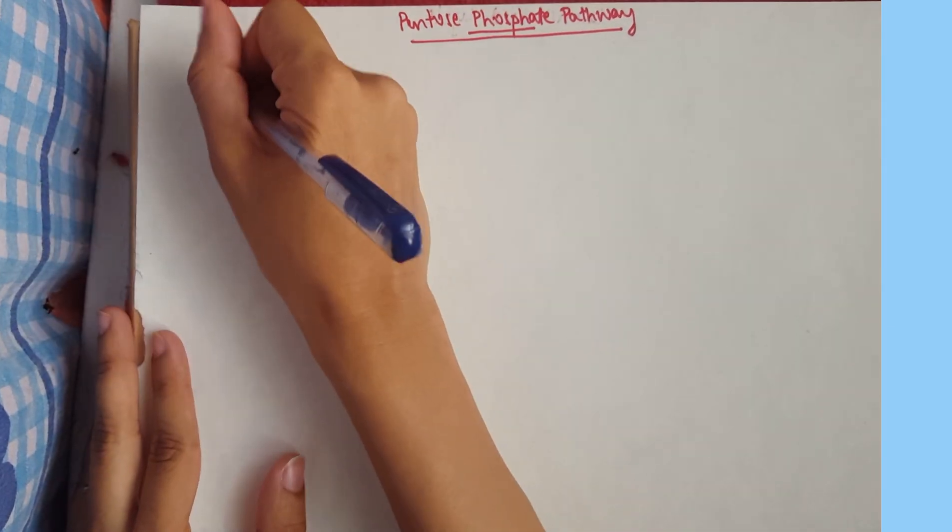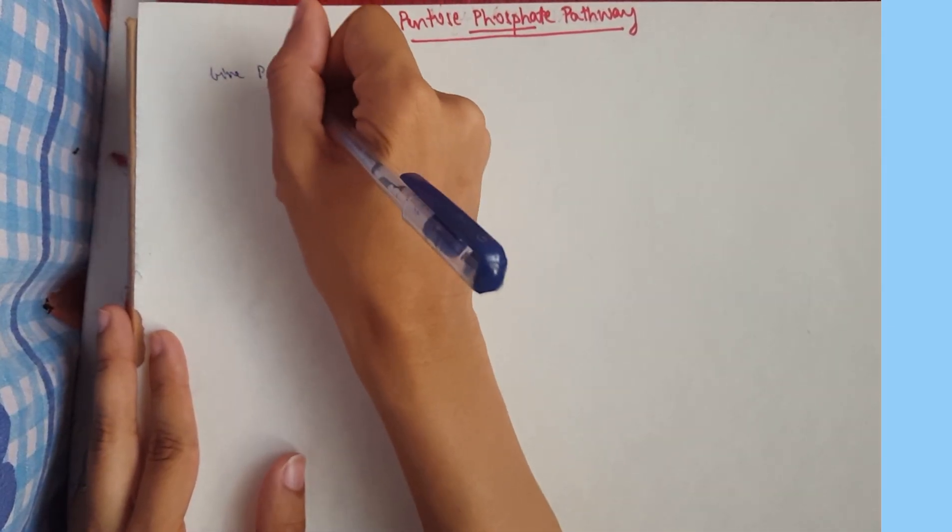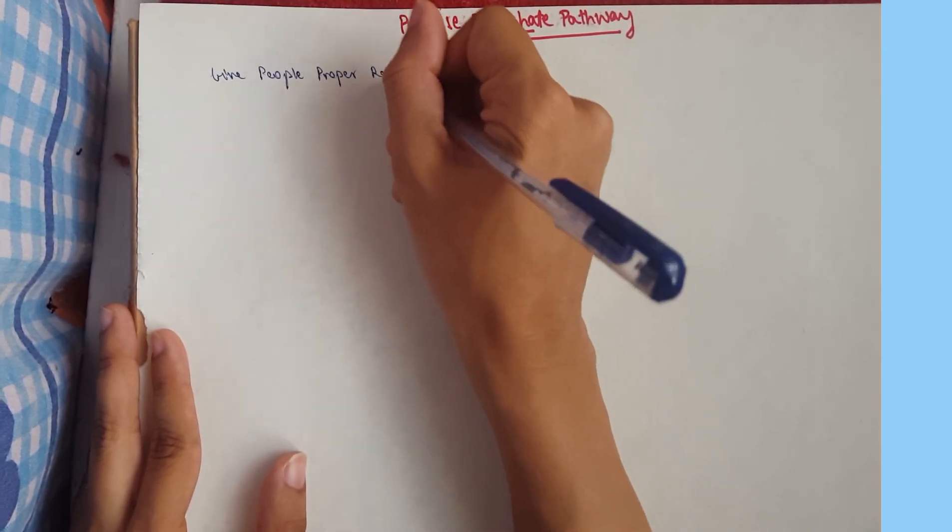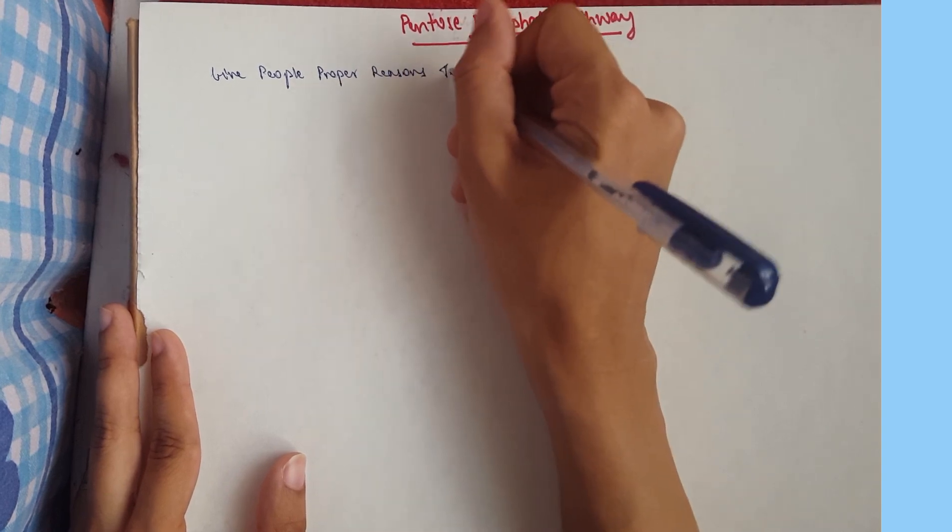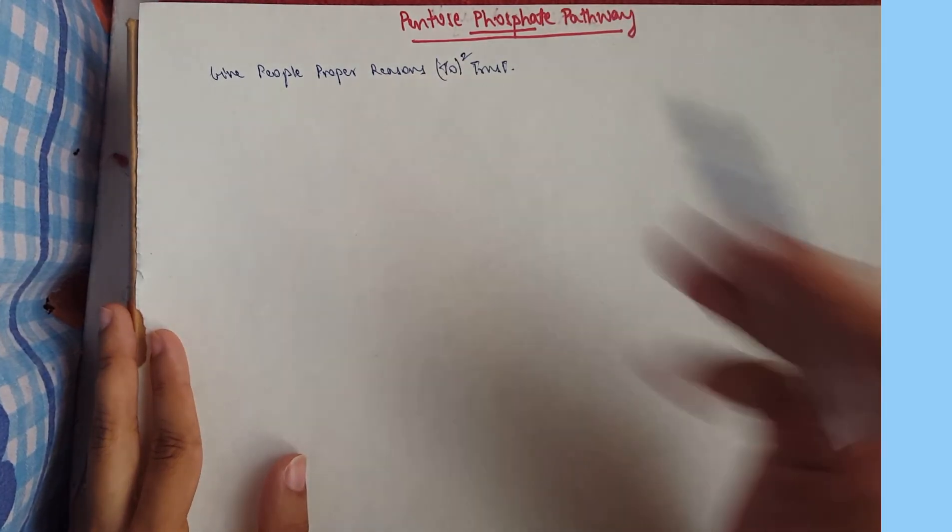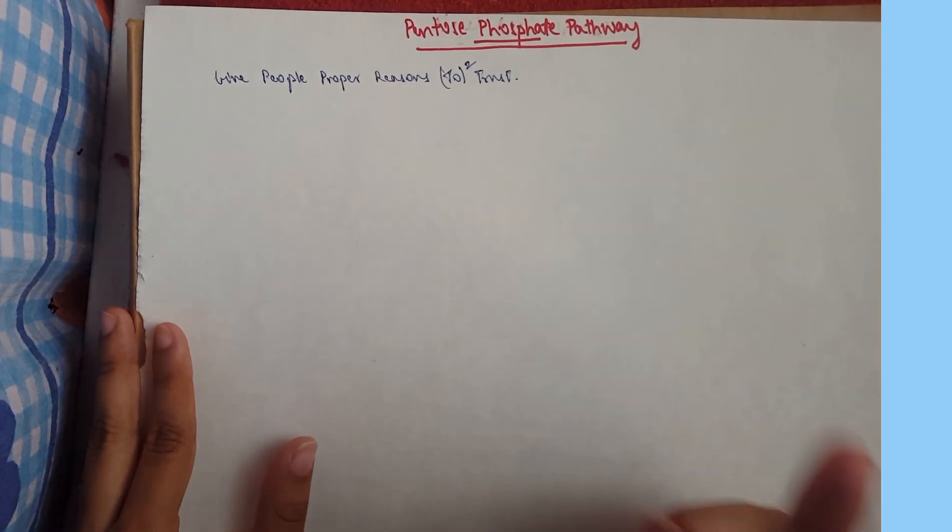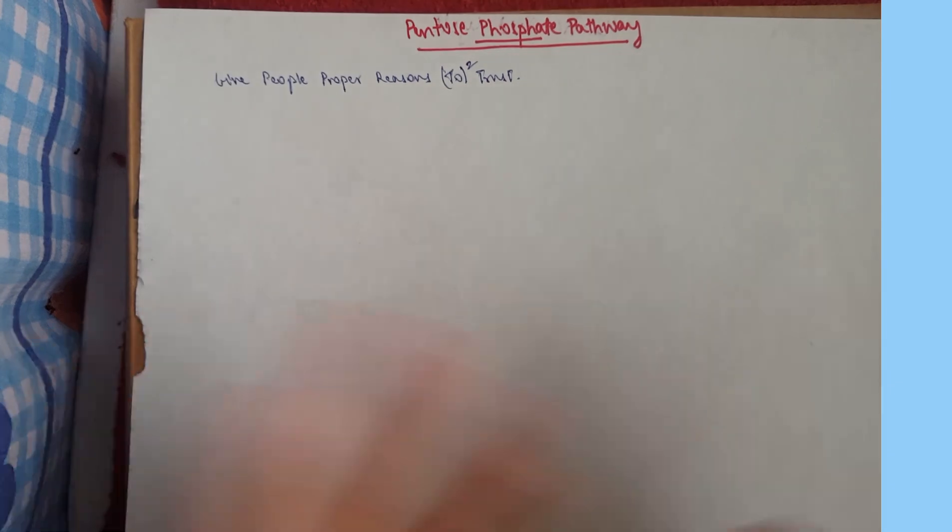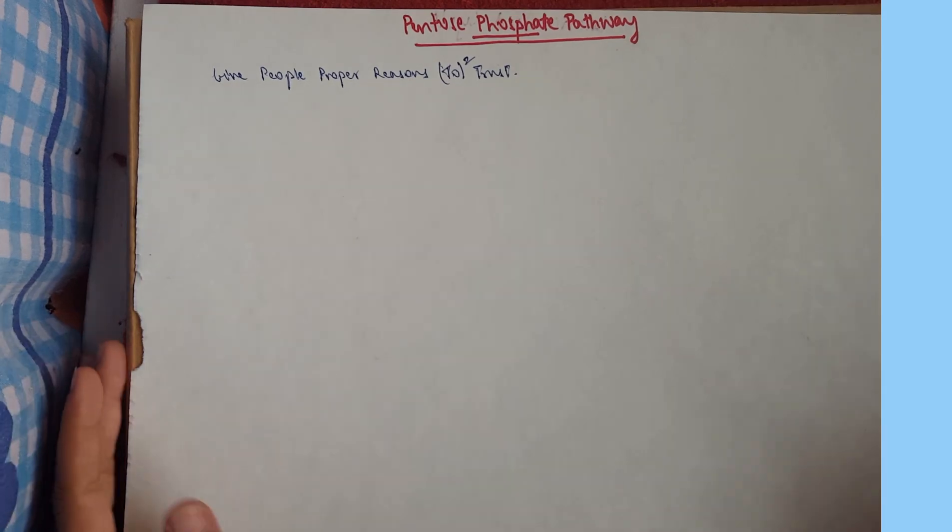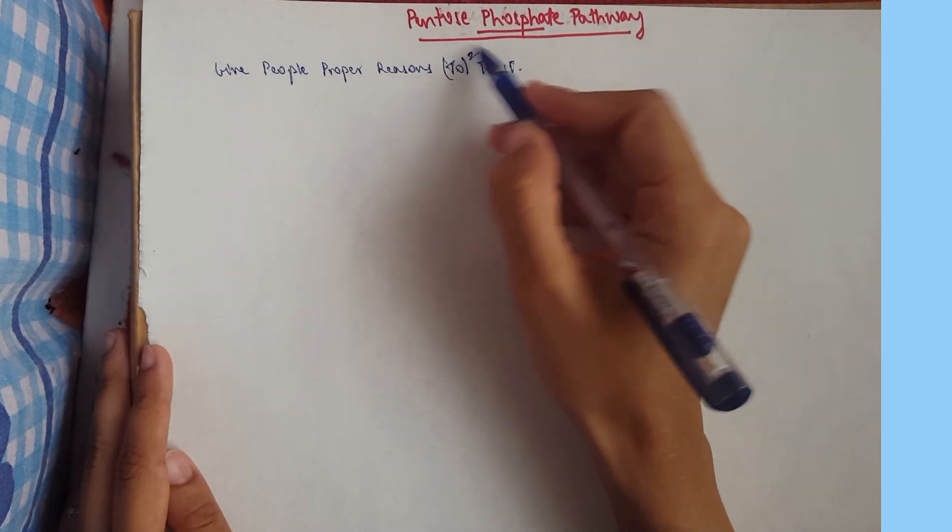Hey guys, this is Leila Kalan and our mnemonic for today would be give people proper reasons to trust. Now I want you to put a square on the two because the same enzyme will be used twice, and this mnemonic is not for the pathway because you might get confused with the substrates and the products. I've written this mnemonic for the enzymes, and it's used twice.